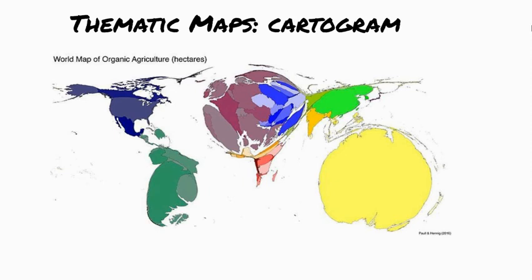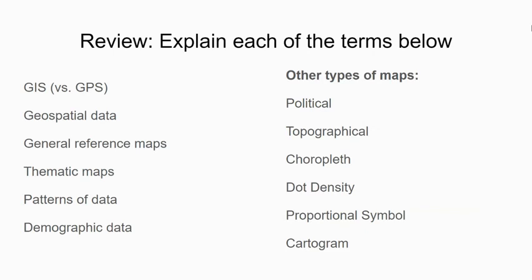In a cartogram, the size of the place is re-scaled to be proportional to the data it represents. In this cartogram, countries are depicted based on the size of their organic agriculture industry — the larger the country appears, the larger the industry is in that country. Where is the organic agriculture industry larger than in the United States? So let's review some of the terms that we learned today.